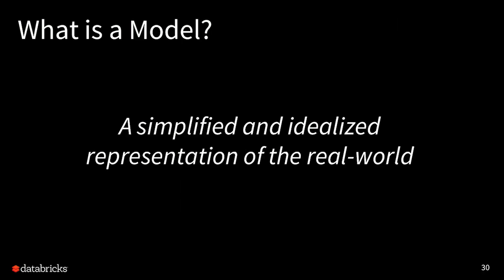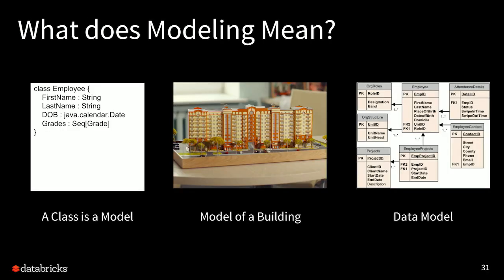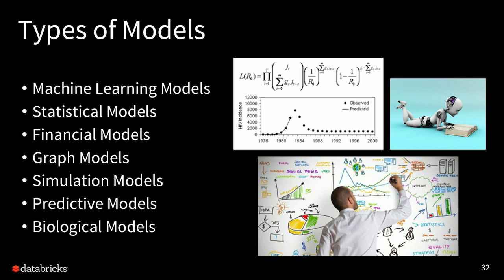A data science platform is really about deploying and developing models. What is a model? A model is a simplified, idealized representation of the real world. For those with a software engineering background, a class is an example of a model — a series of fields representing an employee, but the class itself is not the employee. In architecture, you have a model of a building, or a data model for those from a DBA background — an ERD diagram showing a relational database. In data science, the most common is machine learning models — those are learning a function. But there are other models too: statistical models, financial models, graph-based models, simulation models, predictive models, and biological models. All of these are ways to represent the real world inside a computer.